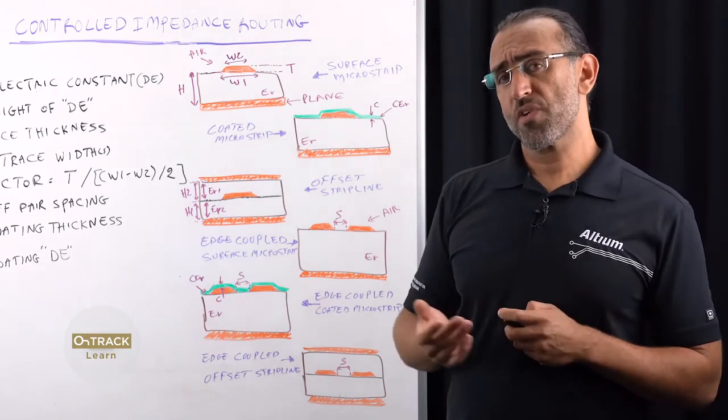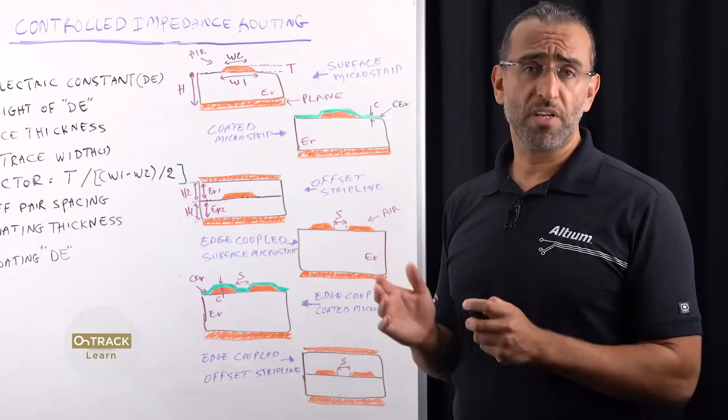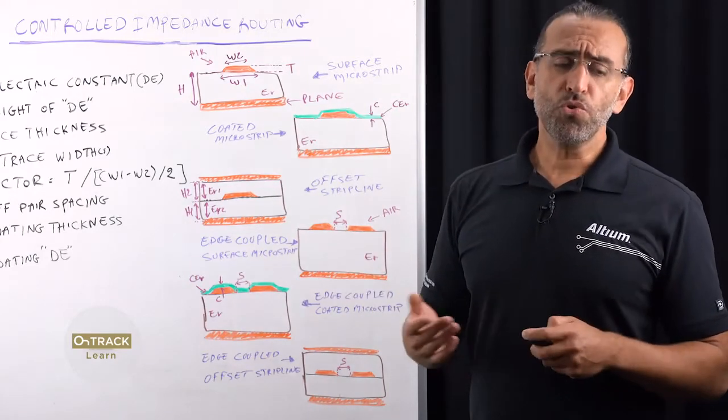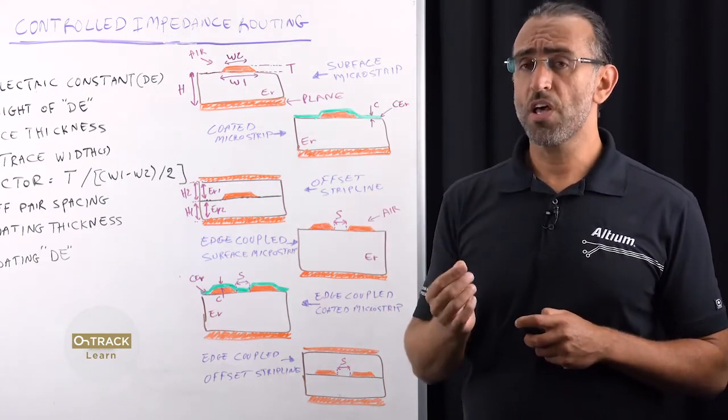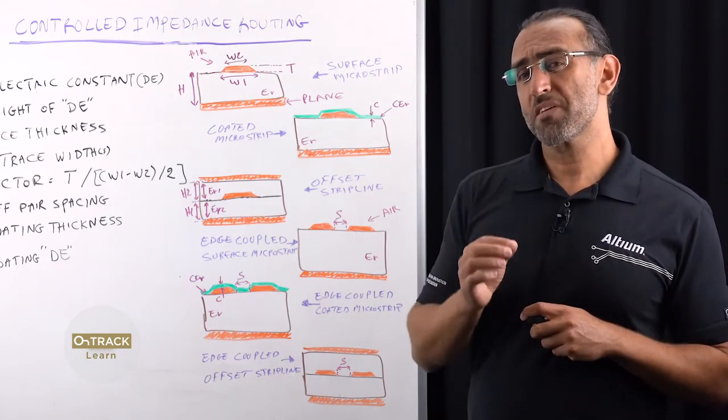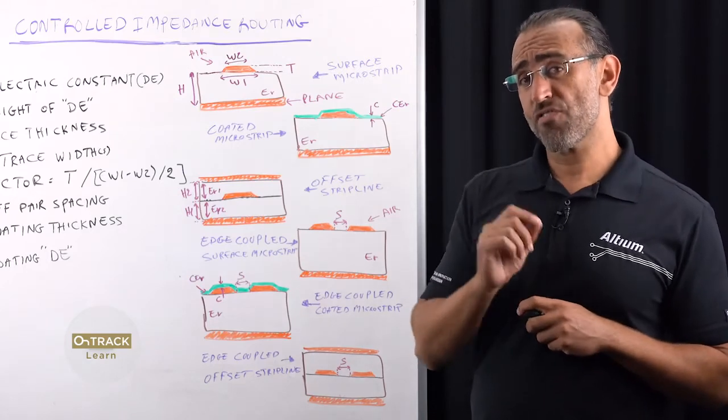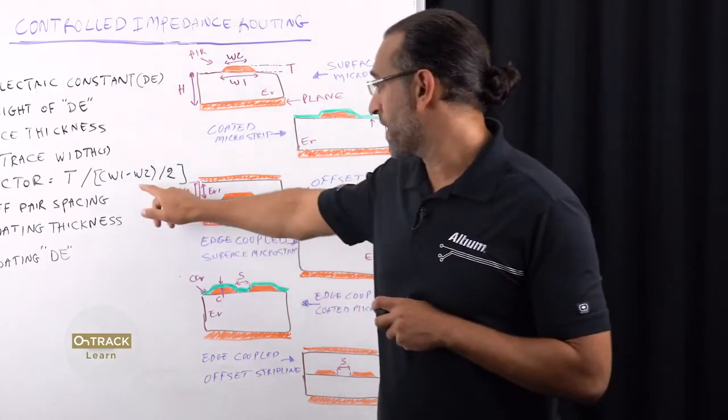In general, the PCB trace impedance would range between 40 and 120 ohms. Also note that the higher the impedance, the more difficult it is to control due to narrower tracks, which will make it relatively more affected by the exact edge factor determined by this formula here.